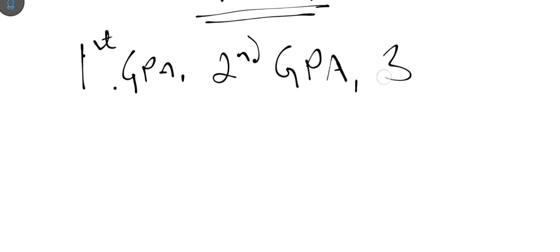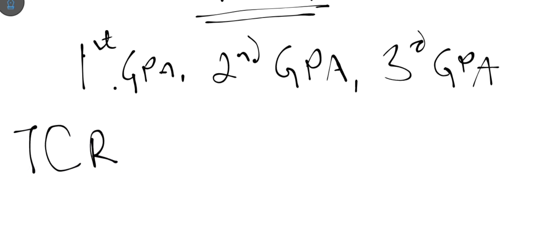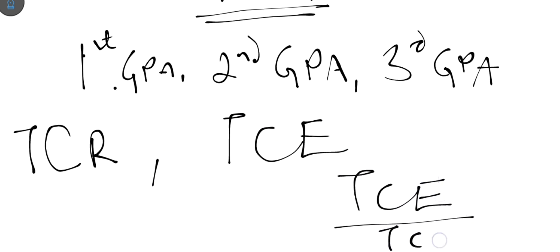CGPA is calculated the same way as GPA, but across all semesters. You accumulate the total credits earned (TCE) from every semester and the total credits registered (TCR) from every semester, then compute TCE ÷ TCR. This gives the true cumulative grade point average.